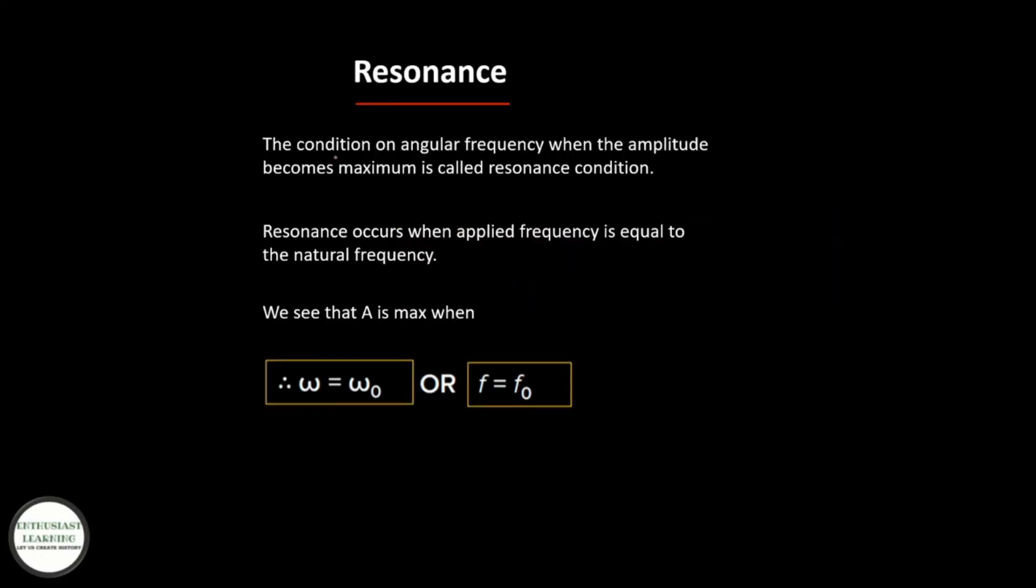Resonance: the condition on angular frequency when the amplitude becomes maximum is called the resonance condition. Resonance occurs when applied frequency equals the natural frequency. We see that A is maximum when ω = ω₀ or f = f₀. That is it for oscillations.